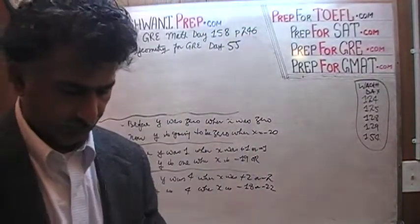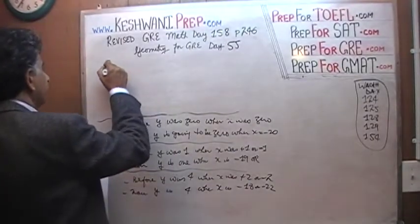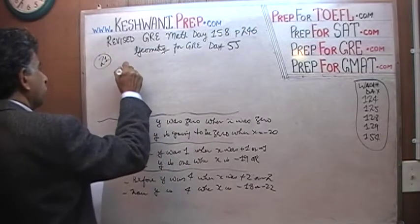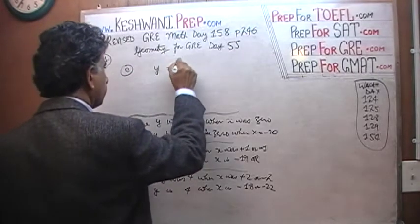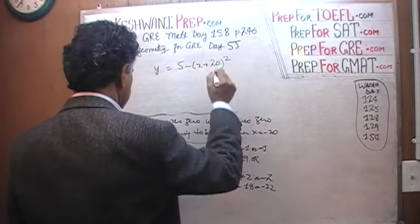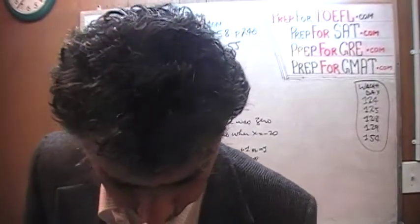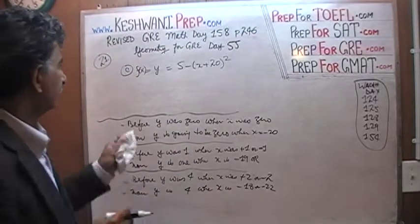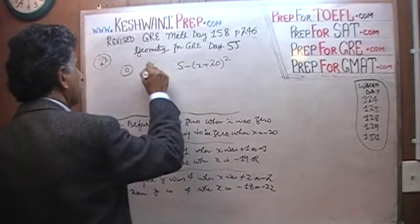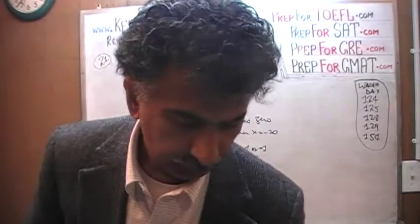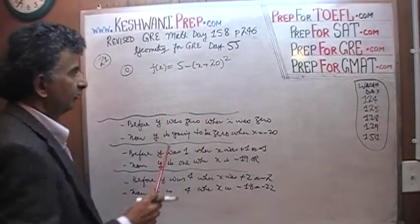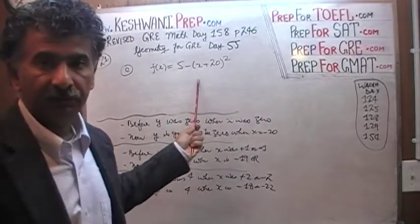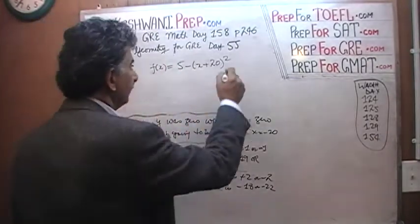Part C, number 21. This is what is given to us. They tell us that f of x equals 5 minus x plus 2 whole squared. The very first thing we have to understand and recognize here is that this is actually an equation of a parabola. That's what we are doing here — this is a parabola.